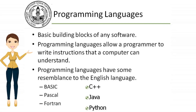Programming Languages are the basic building blocks of any software. Programming Languages allow a programmer to write instructions that a computer can understand. Programming Languages have some resemblance to the English language. Examples include: Basic, C++, Pascal, Java, Fortran, and Python.